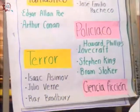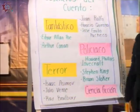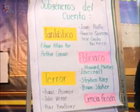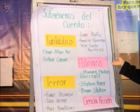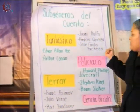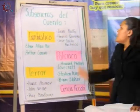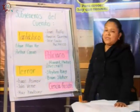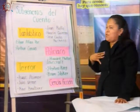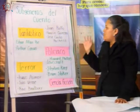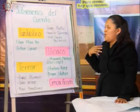También, de acuerdo a la temática, podemos clasificar los cuentos en fantástico, policiaco, de terror y de ciencia ficción, por mencionar algunos. El cuento fantástico es la narración en la que se mezcla la realidad con la fantasía y a veces provoca cierta confusión en el lector. Algunos autores del cuento fantástico pueden ser Juan Rulfo, Horacio Quiroga o José Emilio Pacheco. El cuento policiaco es la narración en la que se persigue un asesinato, un crimen o algún misterio que tiene que resolverse. Algunos autores son Edgar Allan Poe o Arthur Conan.